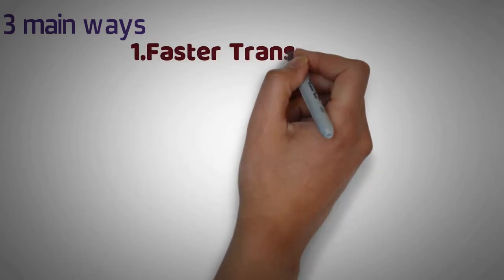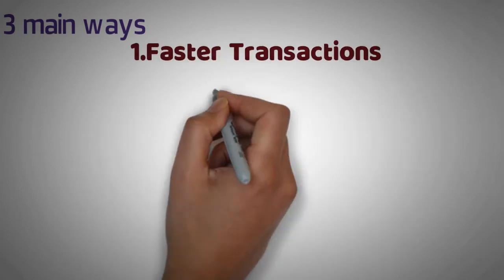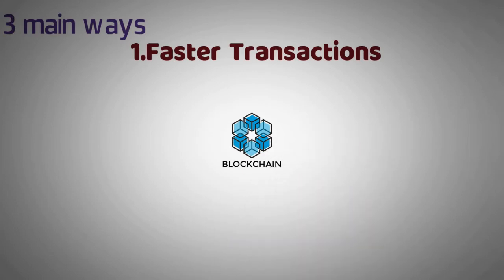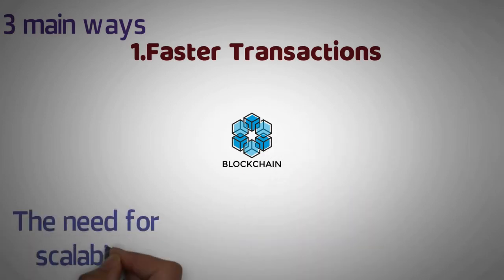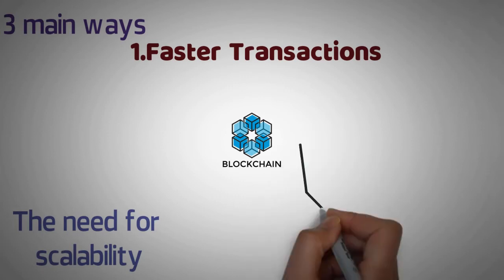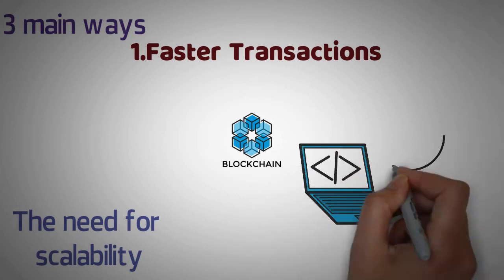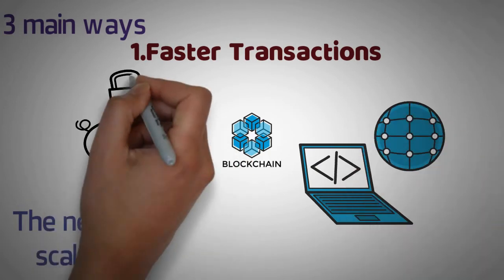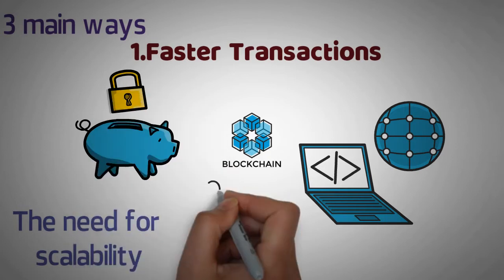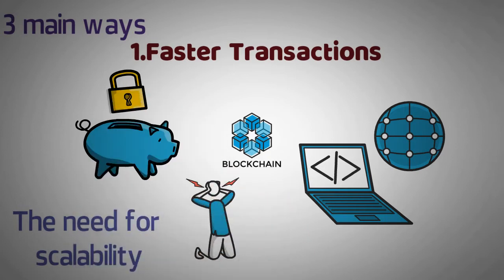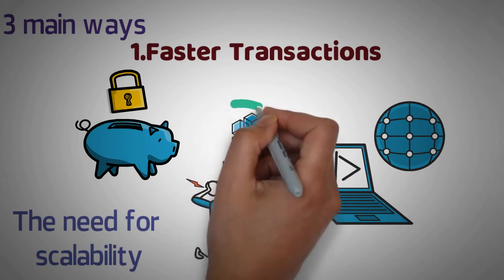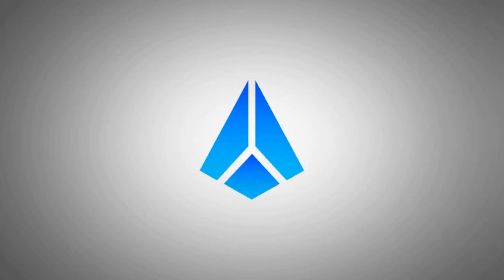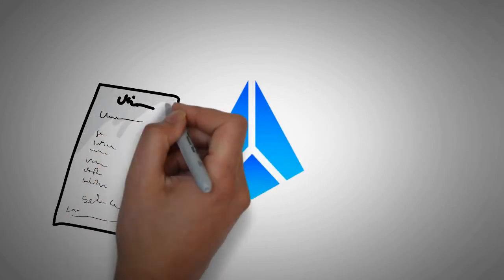How would this occur? Here are three main ways. Number one, faster transactions. The dilemma that every blockchain project faces is how to reconcile the need for security with the need for scalability. In order for a blockchain to be secure, it needs to have a large number of nodes — computers that run the software — spreading out across the world. This decentralization is what makes blockchains so secure. But the more nodes there are, the slower the network becomes, because each node needs to process every single transaction that takes place on the network. With sharding, this would no longer be the case. Nodes would only need to process transactions that take place on their specific shard.